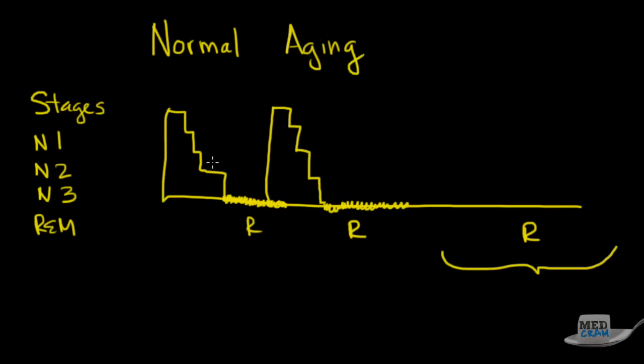These deep stages of sleep, stage three, are usually longer towards the beginning of sleep. Stage three is concentrated toward the beginning of the night, and REM sleep is concentrated more towards the end. Both are very restful. Stage three is physically restful, where growth hormone is produced. REM sleep is very mentally restorative. Both are very important.